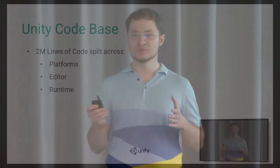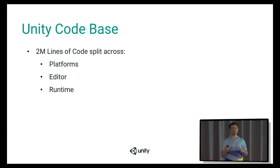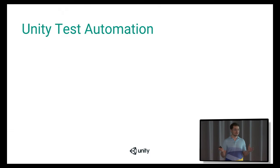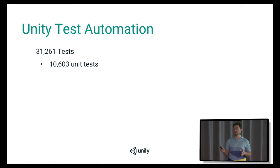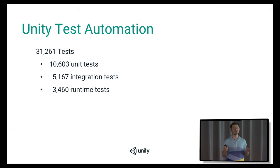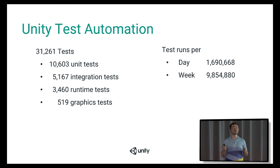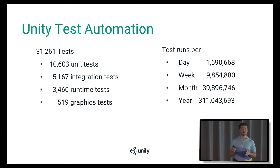Unity itself is a pretty big piece of software. We have around 2 million lines of code, which is evenly split between platforms, editor, and runtime — the three major components of Unity. All of that success and those numbers wouldn't have been possible without Unity test automation. We have around 30,000 tests: 10,000 unit tests, around 5,000 integration tests, 3,000 runtime graphics tests, and so on.